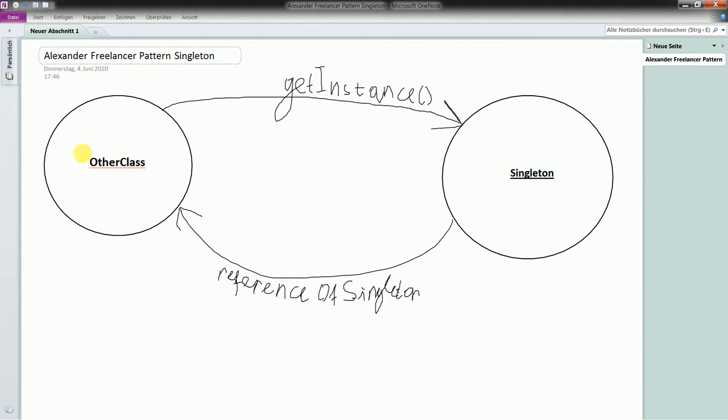So basically what you see is a simplified example of design pattern singleton and how it works. Pretty simple. First I have a case when I have a class which needs to get hold of one particular instance of singleton class. How do I do that? I have get instance. It is a static method.